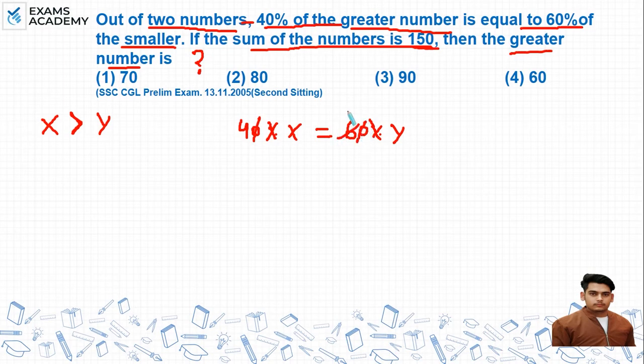Cancel the percent signs and zeros. This gives us 4x = 6y. So the ratio x/y equals 3/2, which is 3:2. In the ratio form, the sum is 5 parts.